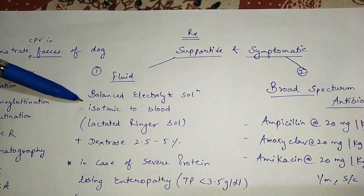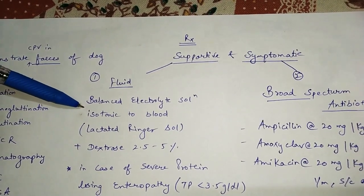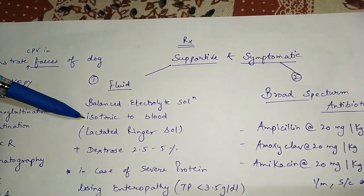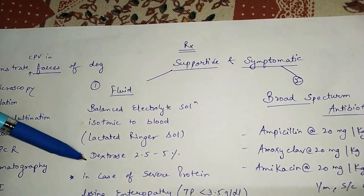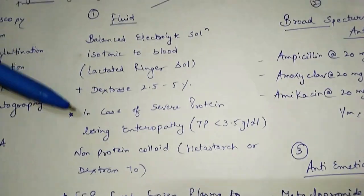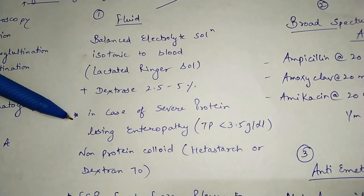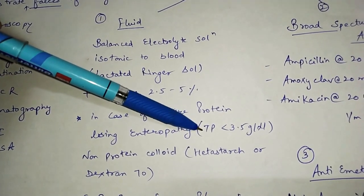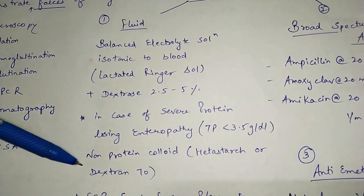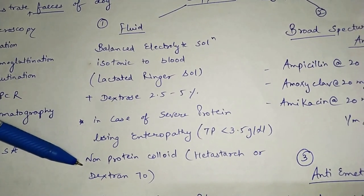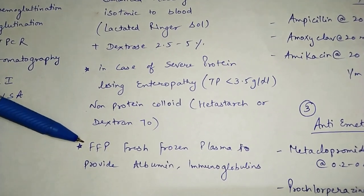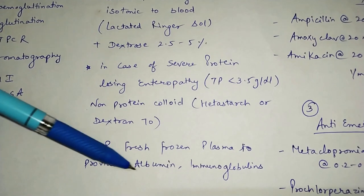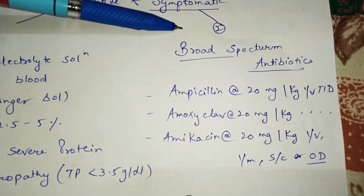Treatment is supportive and symptomatic. Fluid therapy requires a balanced electrolyte solution isotonic to blood, such as Ringer's lactate or dextrose 2.5–5%. In cases of severe protein-losing enteropathy where total protein is less than 3.5 g/dL, non-protein colloid, hetastarch, or dextran 70 can be used. Fresh frozen plasma (FFP) can be given to provide albumin or immunoglobulins.